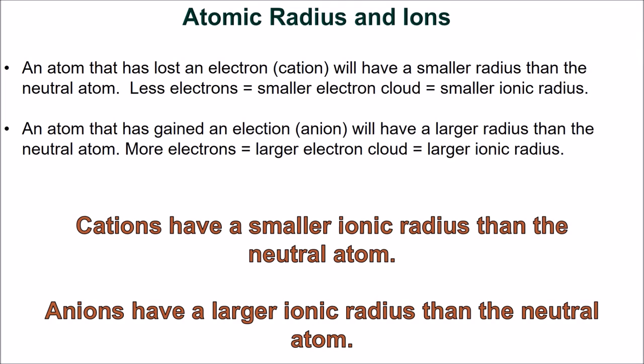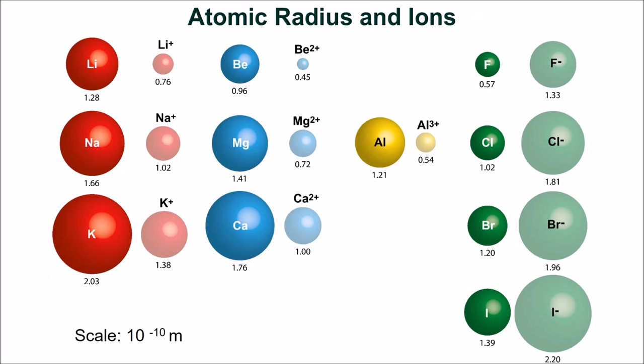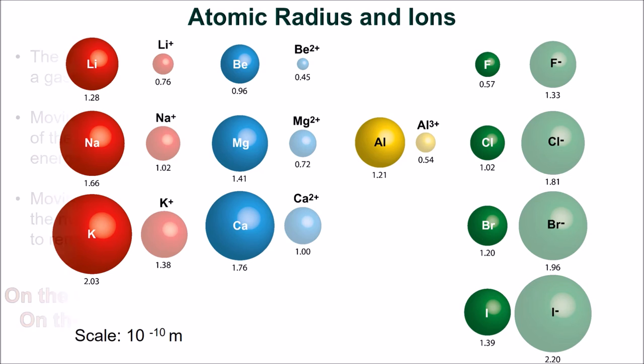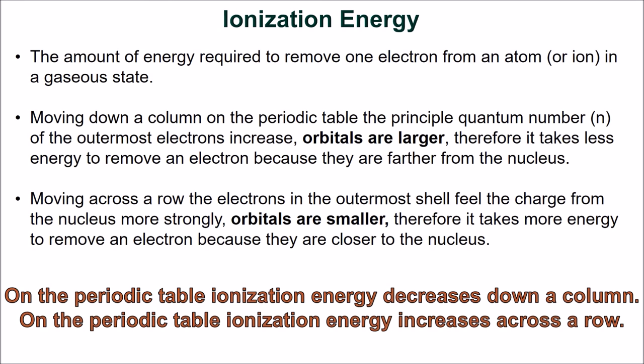The atomic radius of ions changes with the loss or gain of electrons. A cation will have a smaller radius than the neutral atom — fewer electrons result in a smaller electron cloud and a correspondingly smaller ionic radius. An anion will have a larger radius than the neutral atom — more electrons result in a larger electron cloud and a correspondingly larger ionic radius. Ionization energy is the amount of energy required to remove one electron from an atom or ion in a gaseous state. Moving down a column, the principal quantum number n increases and orbitals are larger, so it takes less energy to remove an electron because they are farther from the nucleus. Moving across a row, the electrons feel the nuclear charge more strongly and orbitals are smaller, so it takes more energy to remove an electron.